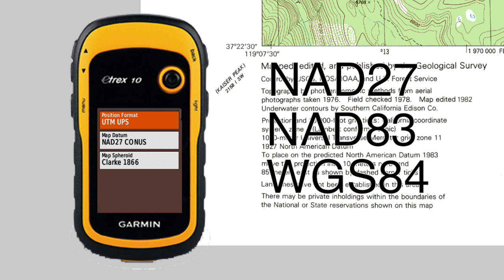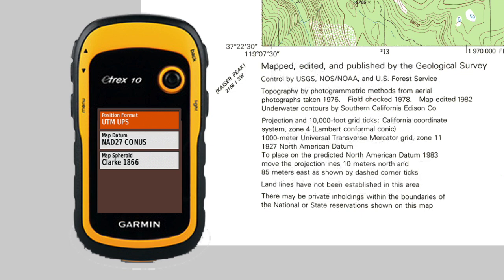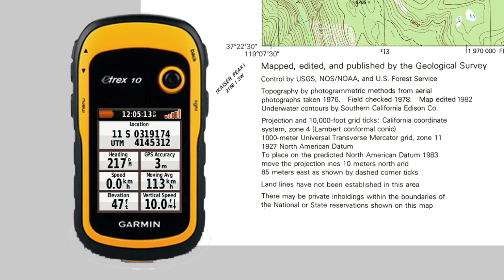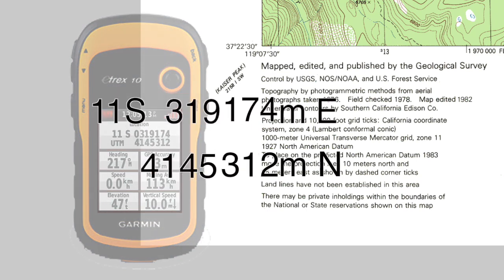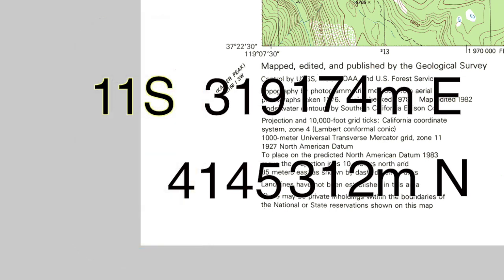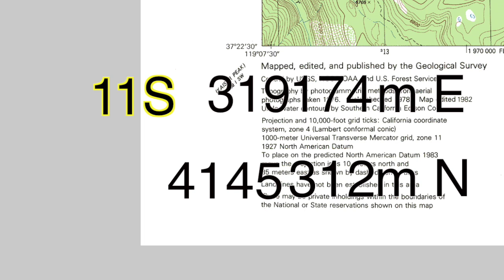The first step in plotting our coordinate is to locate the 1000 meter grid square defined by the UTM coordinate. The 11S is the zone number and latitude band letter. This part is necessary to make this coordinate a unique location on a global scale. Unless you're working with coordinates that cover a very large area, you can usually ignore the zone.